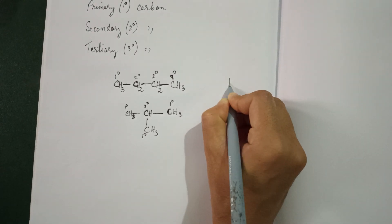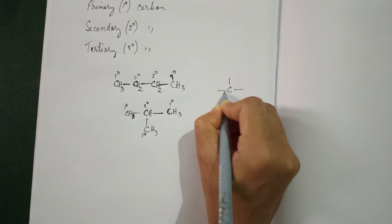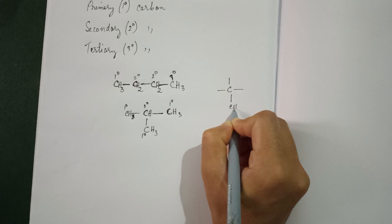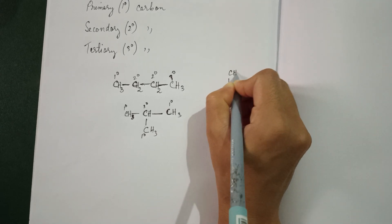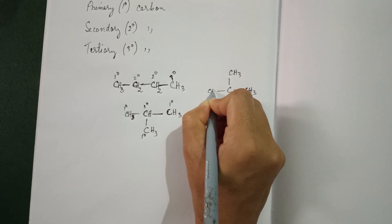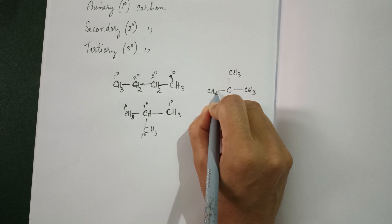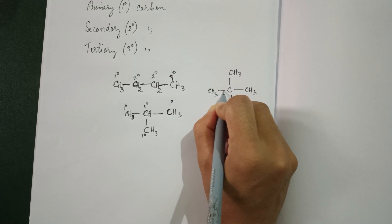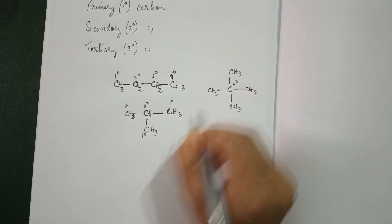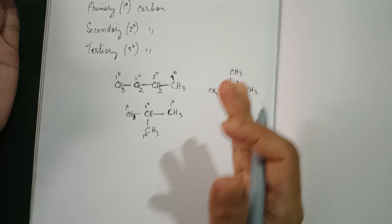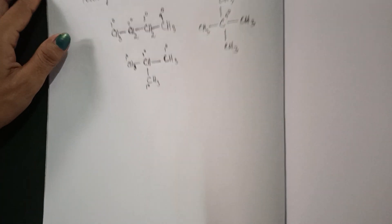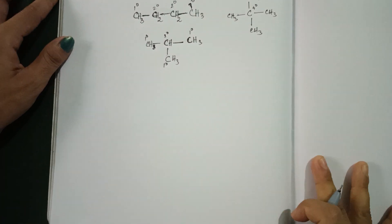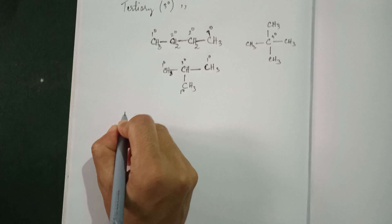Is there any four-degree carbon? Let us draw — this carbon is connected to how many carbons? The terminal carbons we can write as CH3, making sure it is a single bond. So this is your four-degree carbon. Now that we are clear with primary, secondary, tertiary, and four-degree carbon, we can learn some other ways.